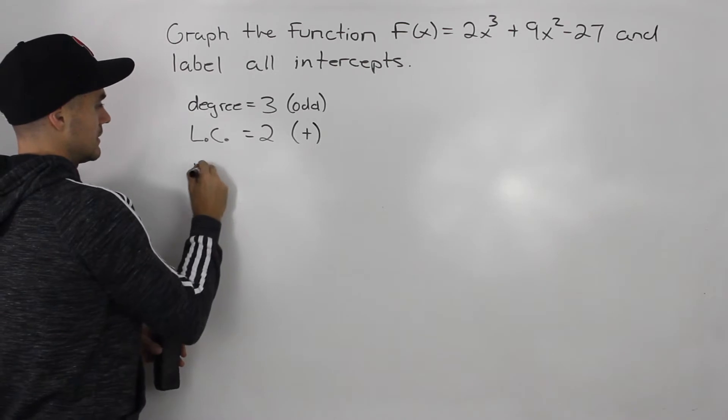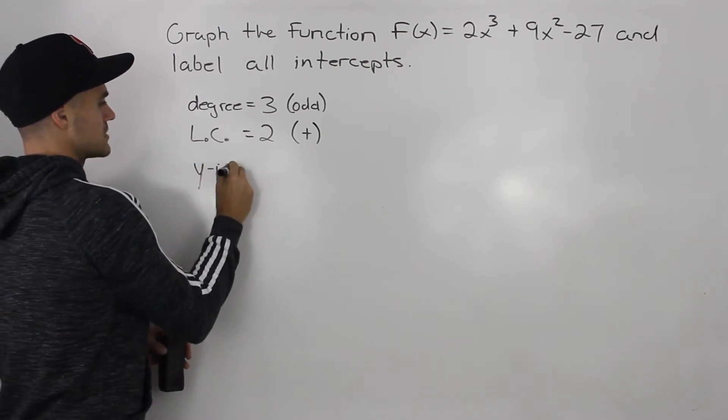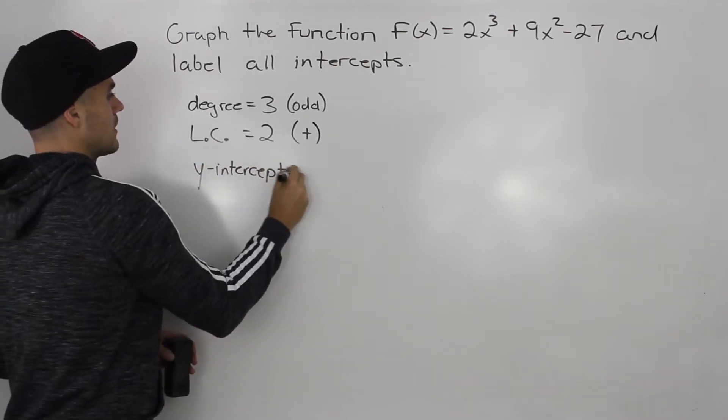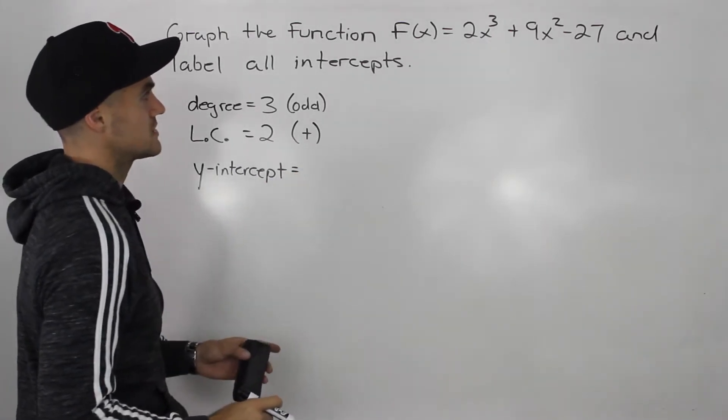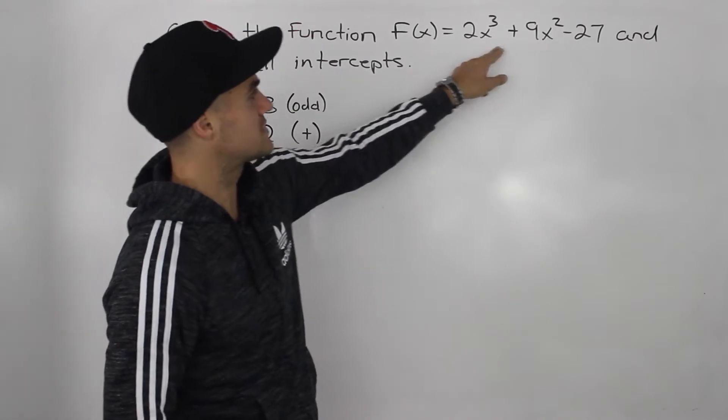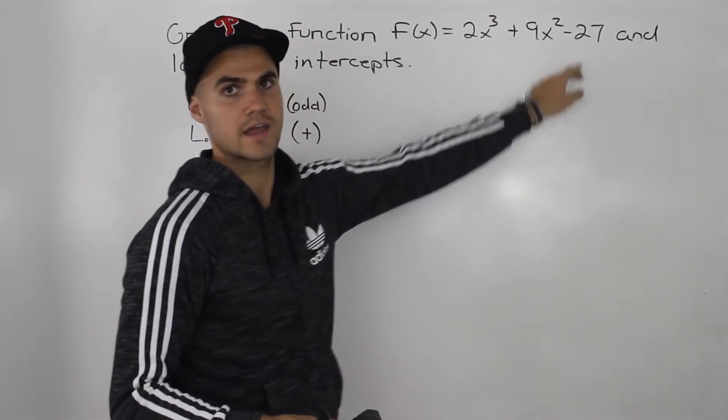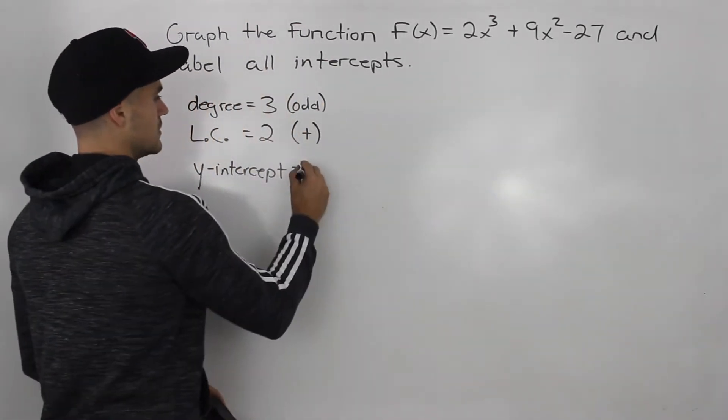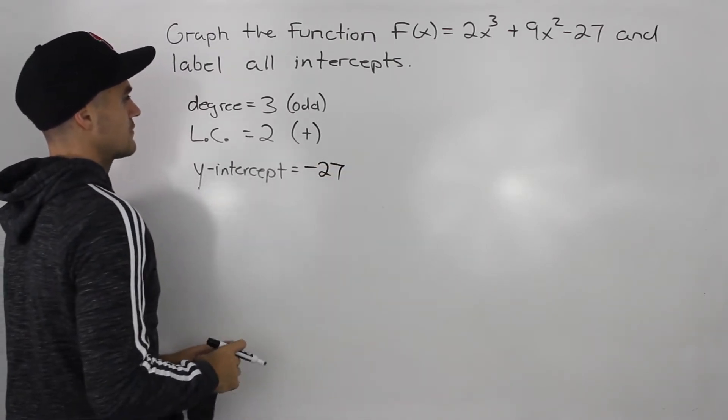Next, let's figure out what the y-intercept is, because we're going to have to label that on the graph anyway. Y-intercept is super easy, we just plug in 0 for all the x's, and we're just left with negative 27. So we know the y-intercept is going to be negative 27.